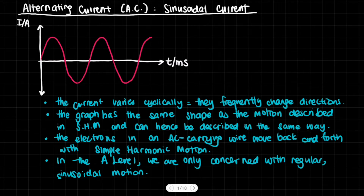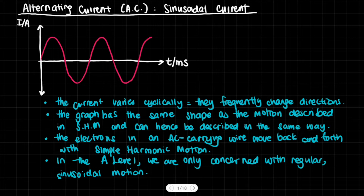This graph has the same shape as the motion described in simple harmonic motion, and hence can be described in the same way. Something very common in physics and engineering is when you find that a certain phenomenon has the same formula or the same form as another phenomenon — then you can take results from one and apply them to the other.